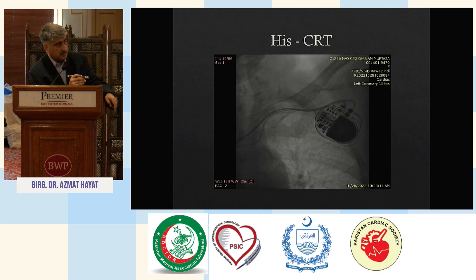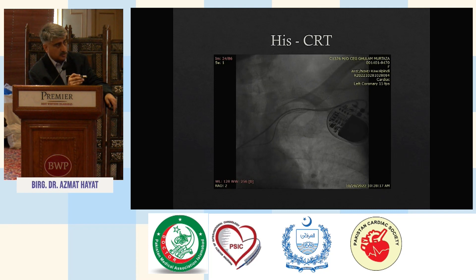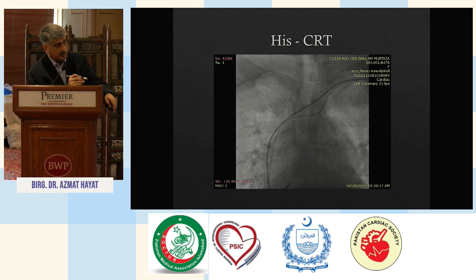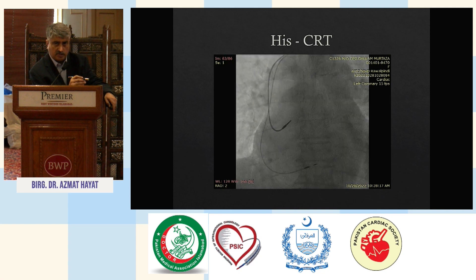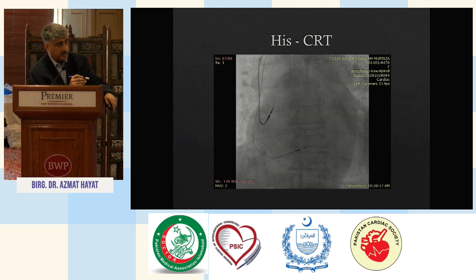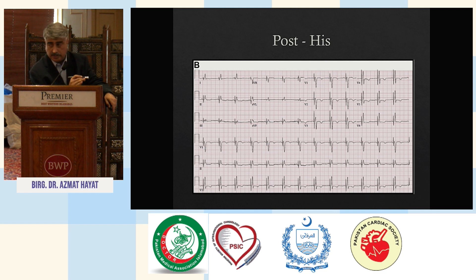This is a His bundle lead setup — a standard pacemaker with two leads: an atrial lead, and a second lead fixed into the His bundle. This was one of our earlier patients, done about three to four years ago, and this patient is still with us, doing remarkably well. The post-His bundle ECG shows a remarkable difference compared to pre-procedure, and he has improved significantly — from NYHA class 3, he is now easily between class 1 and class 2.